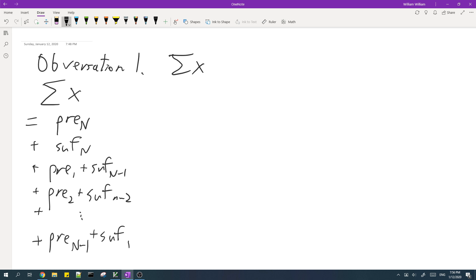And here, you know that each term is equal to the sum of the original array a. And in fact, there are n plus 1 terms. So you know that the sum of x is equal to n plus 1 times the sum of a.